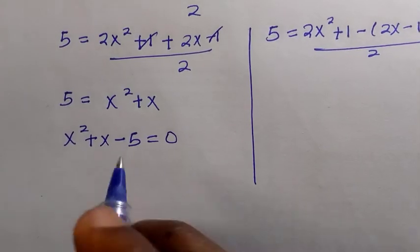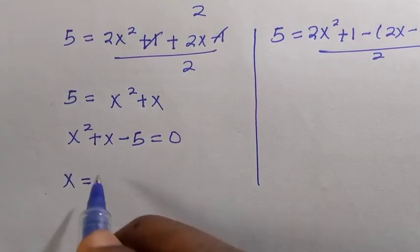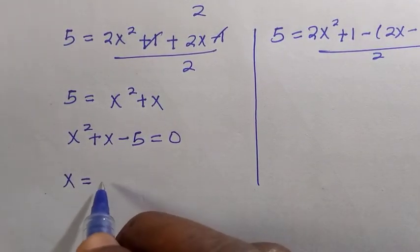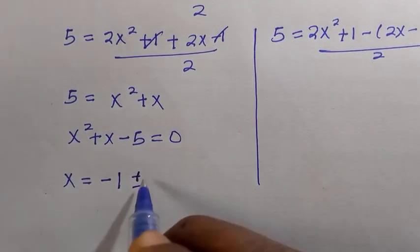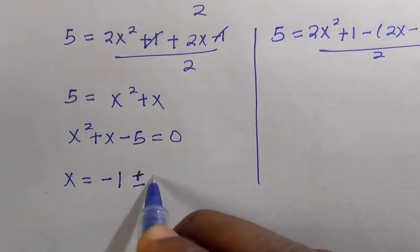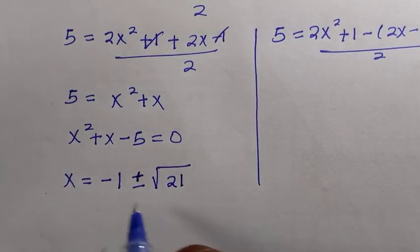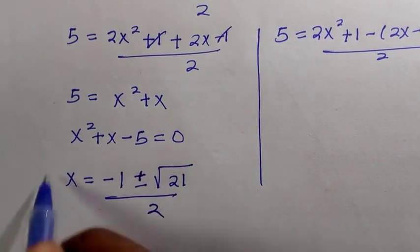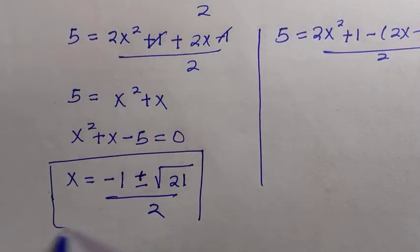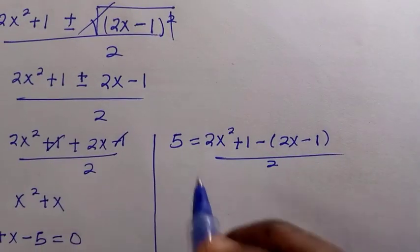This is another quadratic. Solving x² plus x minus 5 equals 0 using the quadratic formula gives x equals negative 1 plus or minus the square root of 21, divided by 2.